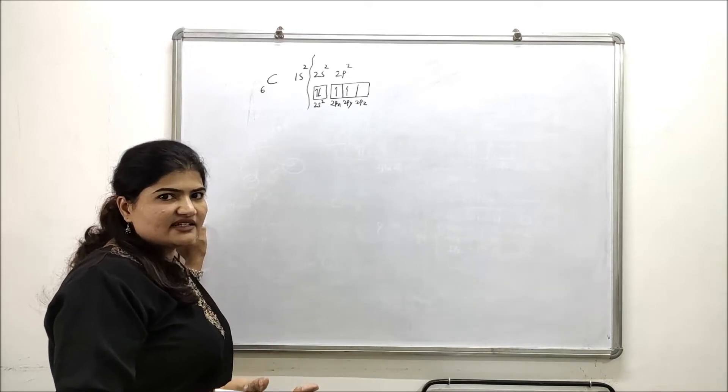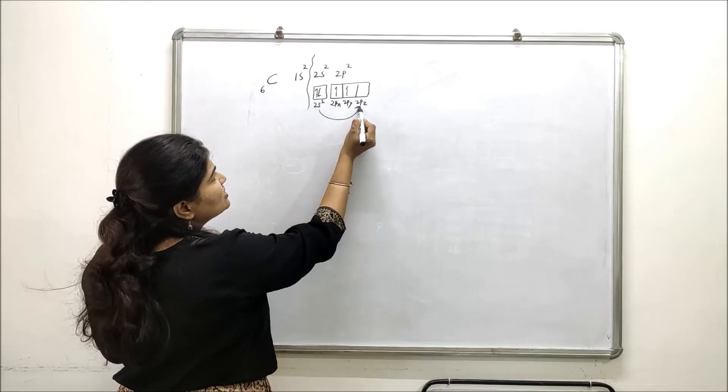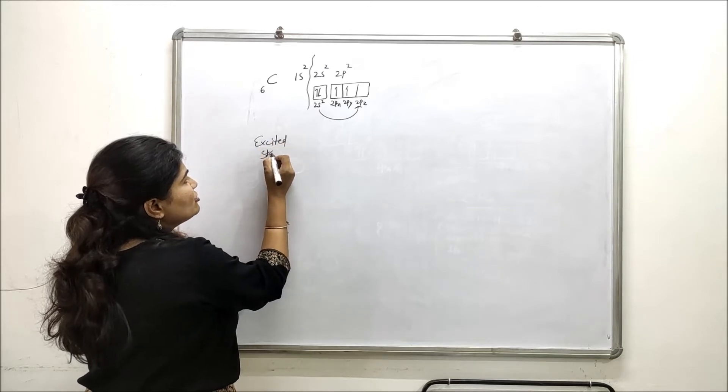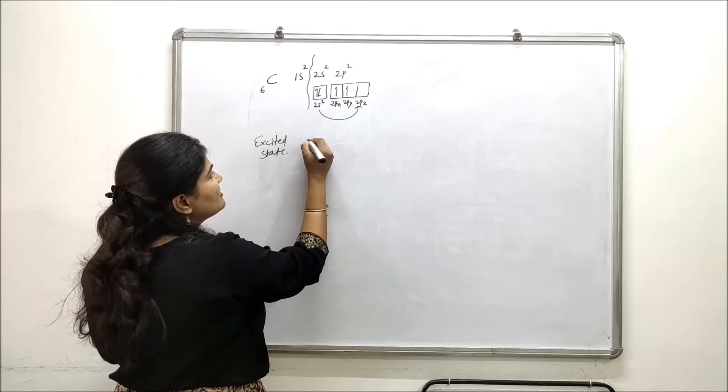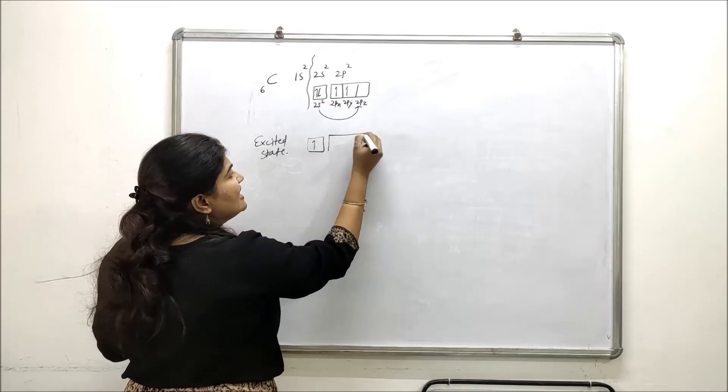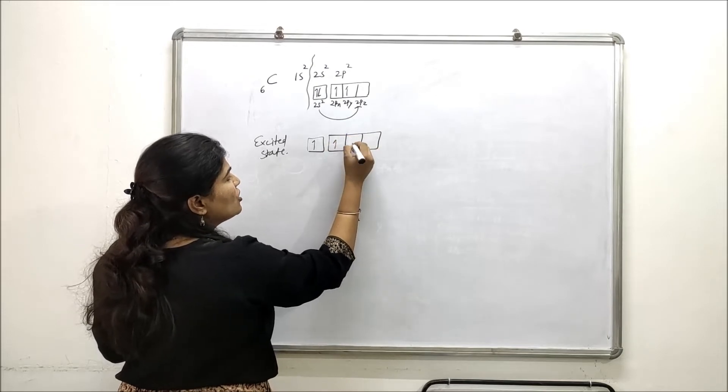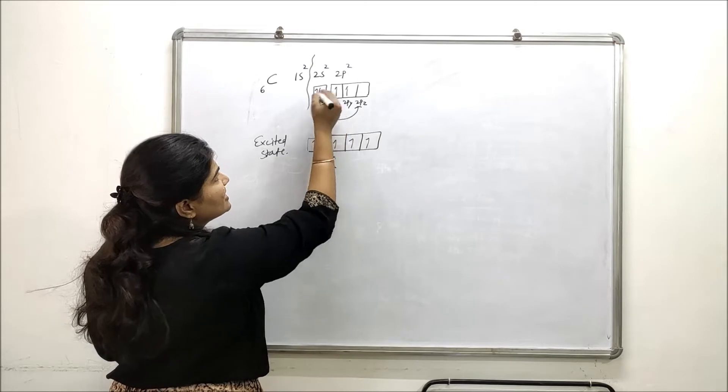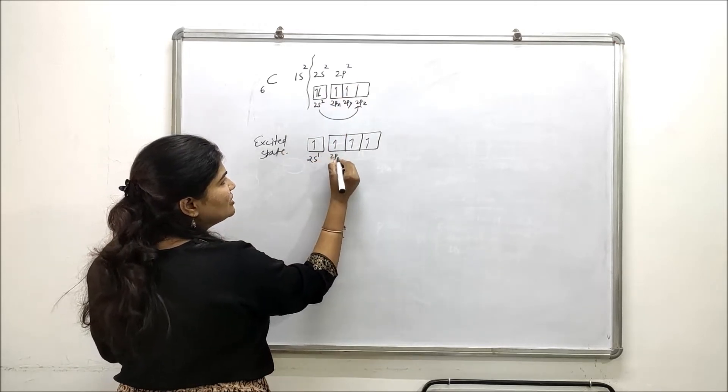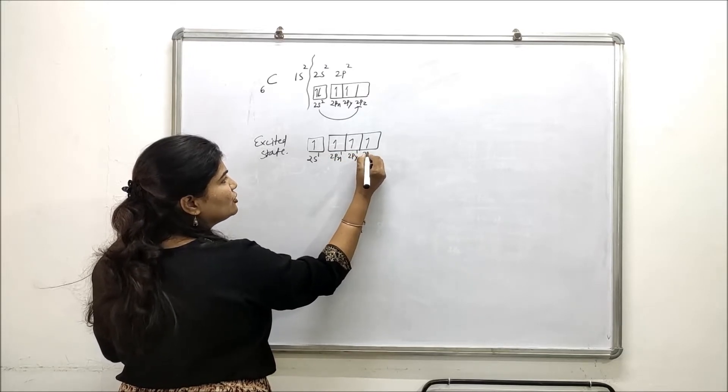So it will go to excited state. It will promote one of the electrons from 2s to the empty 2pz. So in excited state, the electronic configuration of carbon will be 2s¹ with only one electron left, and in p there will be three electrons. Now these two were originally there and this new came from the 2s. So this is how the configuration in excited state will look like: 2s¹, 2px¹, 2py¹ and 2pz¹.